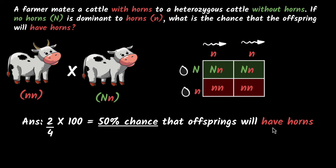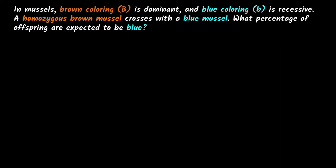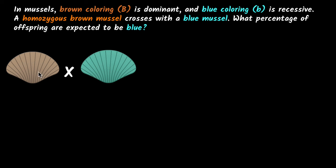Let's do one more. Why don't you try pausing the video and see if you can solve this entire question yourself. We are given that in mussels, brown coloring (B) is dominant and blue coloring (b) is recessive. A homozygous brown mussel crosses with a blue mussel. So let me just directly show that. A brown mussel crosses with a blue mussel. What percentage of offsprings are expected to be blue?